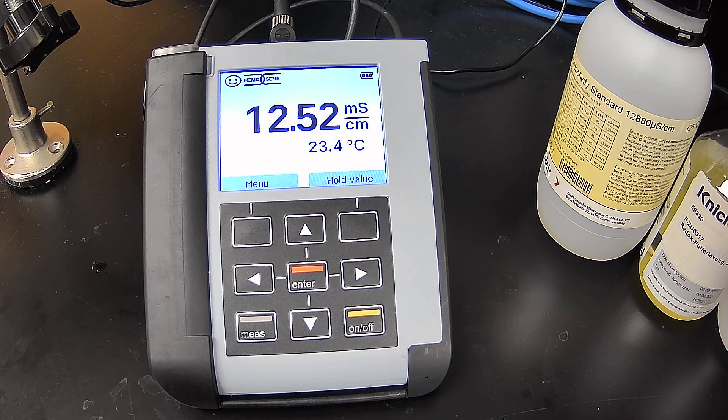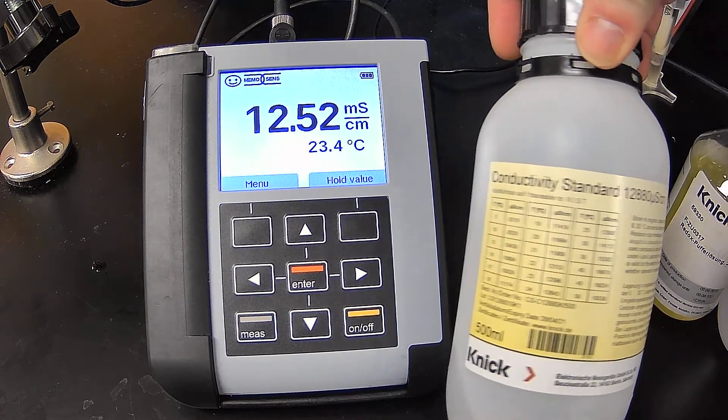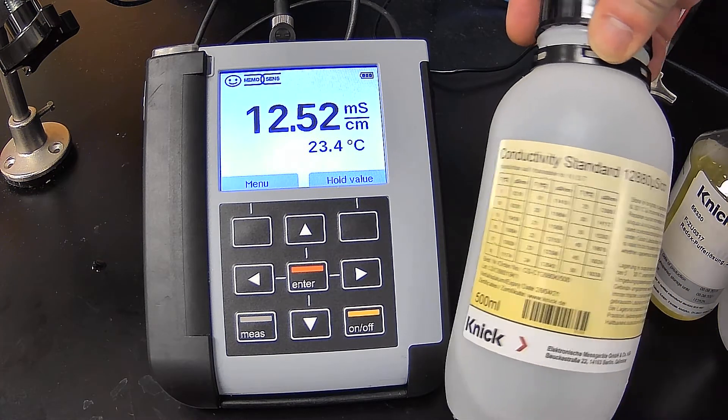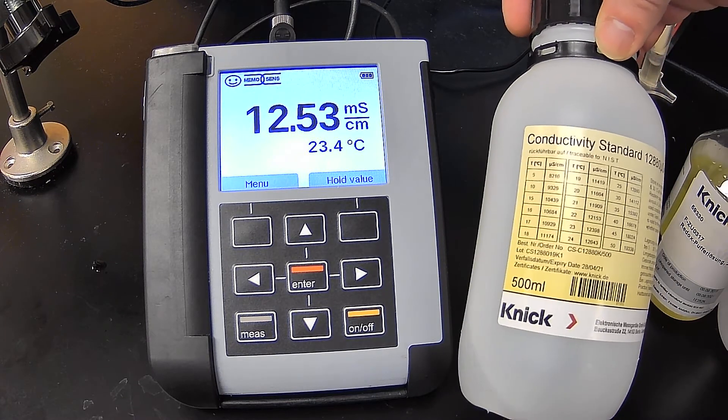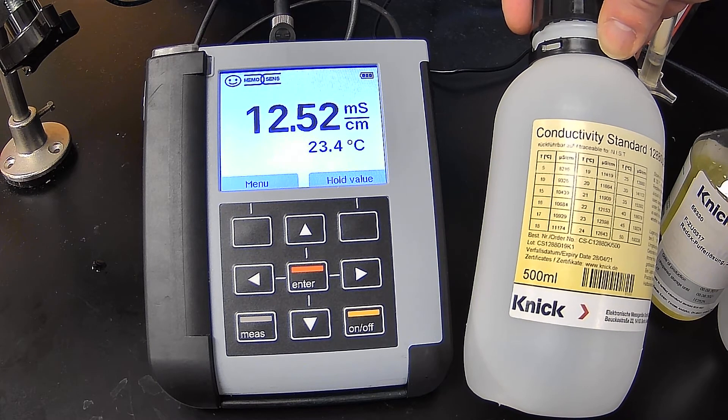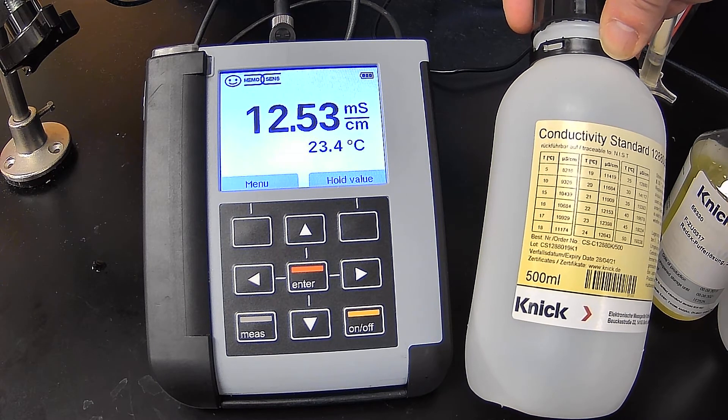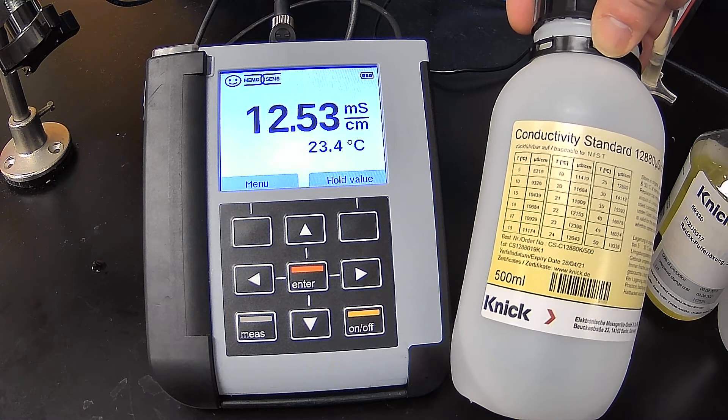So again, it's a one-point calibration. There are multiple ways to calibrate a conductivity probe, but in this case, we're going to use a 12,880 microsiemen calibration solution. And at 23 degrees Celsius, that is going to be 12,398 microsiemens.